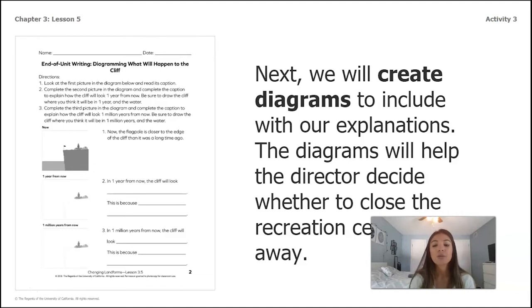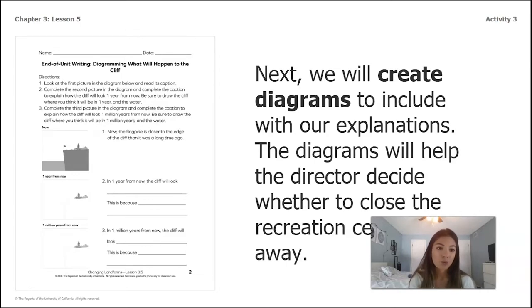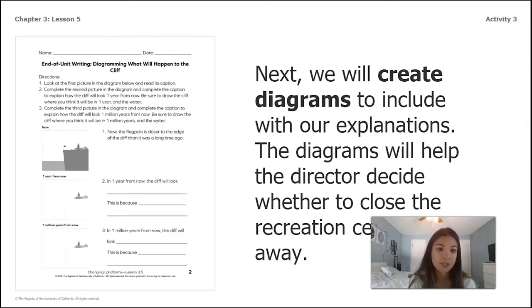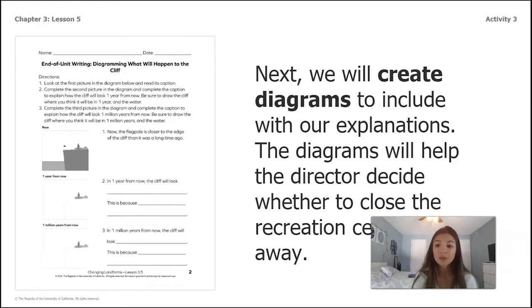This worksheet is in your packet and you'll be completing it on your own, but let's read through the directions together. Direction one: look at the first picture in the diagram below and read its caption. When I look at the picture, it's showing a picture of the cliff and the caption says: 'Now the flagpole is closer to the edge of the cliff than it was a long time ago.' That is what the cliff looks like today.